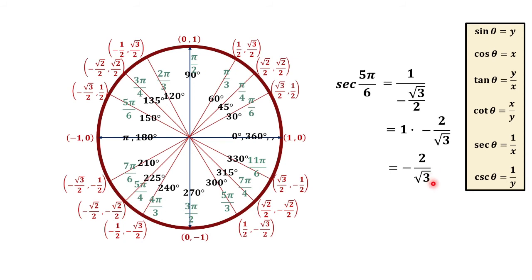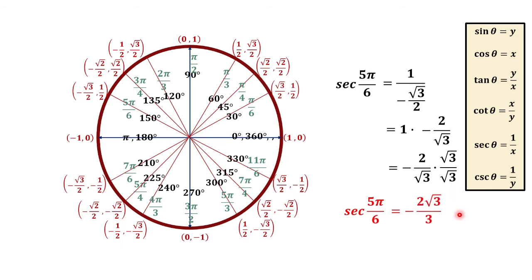To rationalize, we multiply this quantity by square root of 3 over square root of 3. And we have secant 5 pi over 6 is equal to negative 2 square root of 3 over 3.